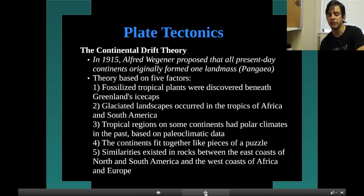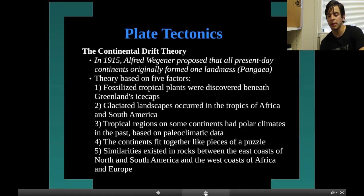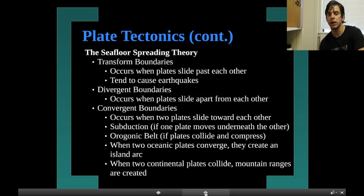One, fossilized tropical plants were discovered beneath Greenland's ice caps. Two, glaciated landscapes occurred in the tropics of Africa and South America. Three, tropical regions on some continents had polar climates in the past, based on paleoclimatic data. Four, the continents fit together like pieces of a puzzle. Five, similarities existed in rocks between the East Coast of North and South America and the West Coast of Africa and Europe.